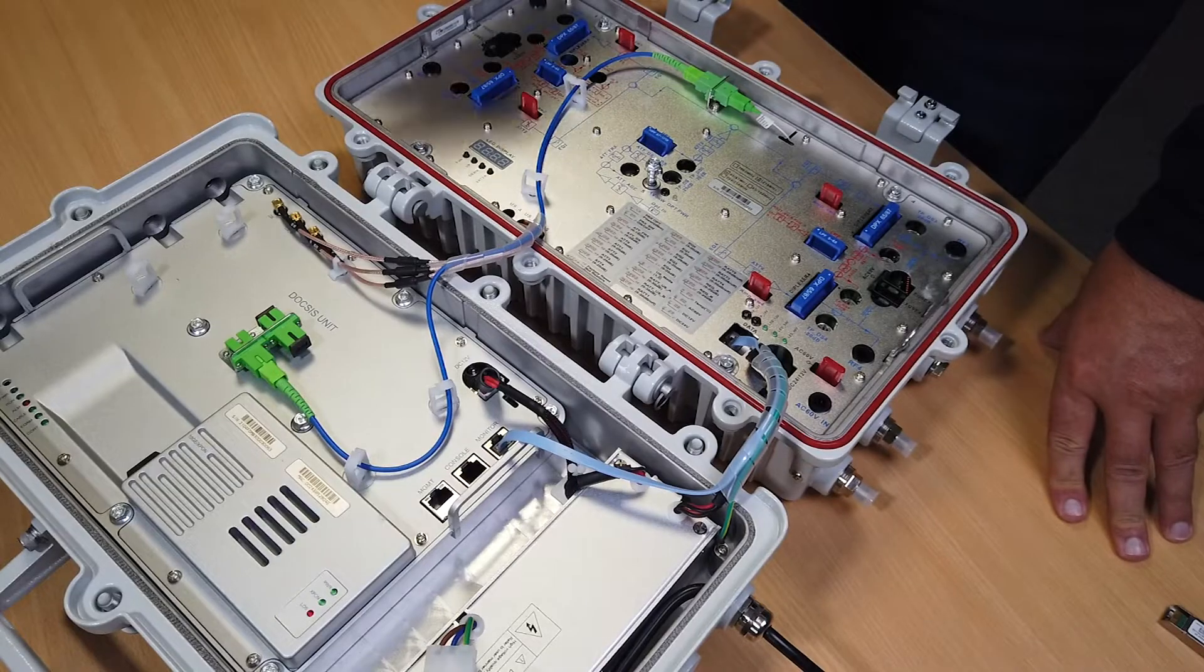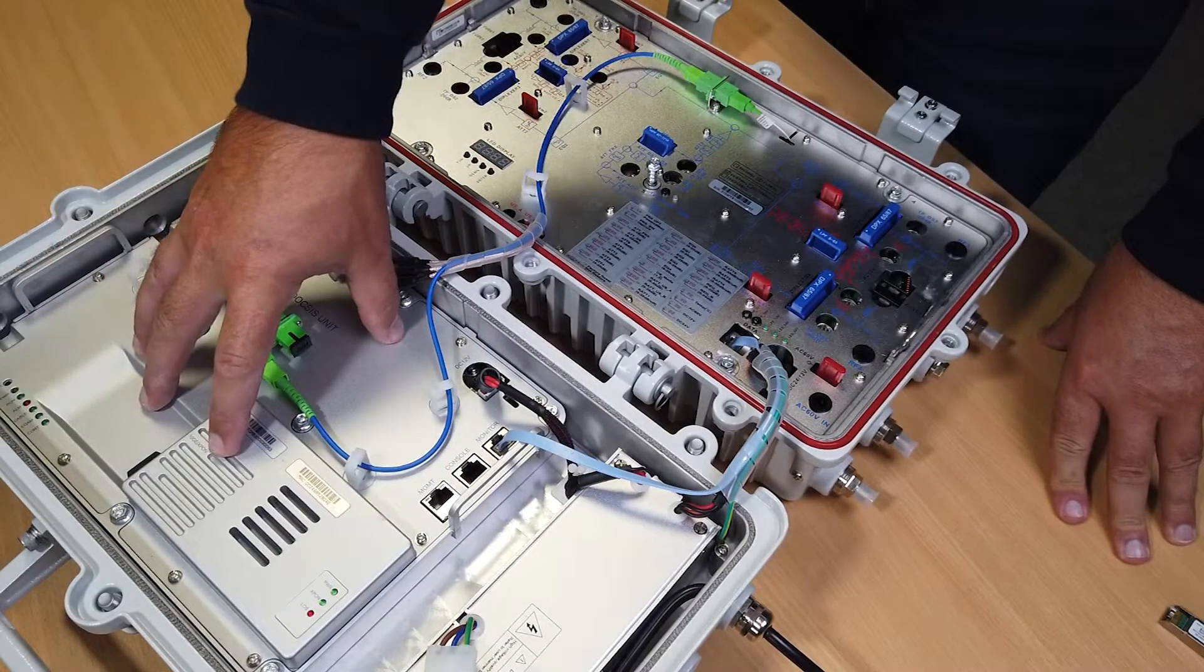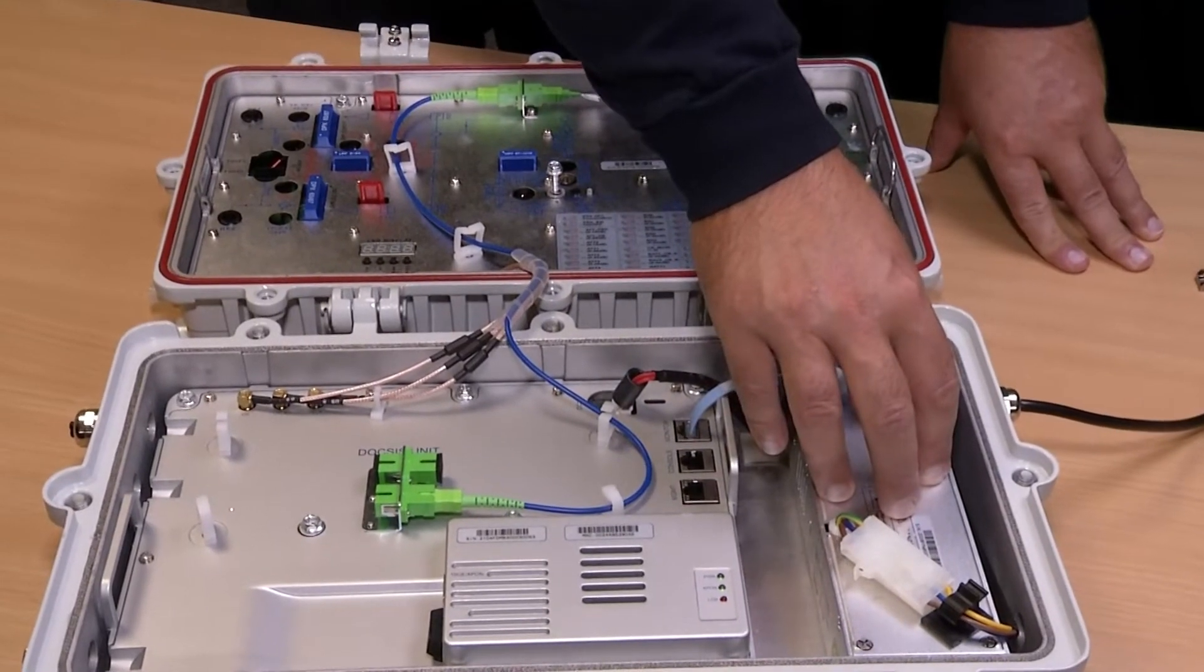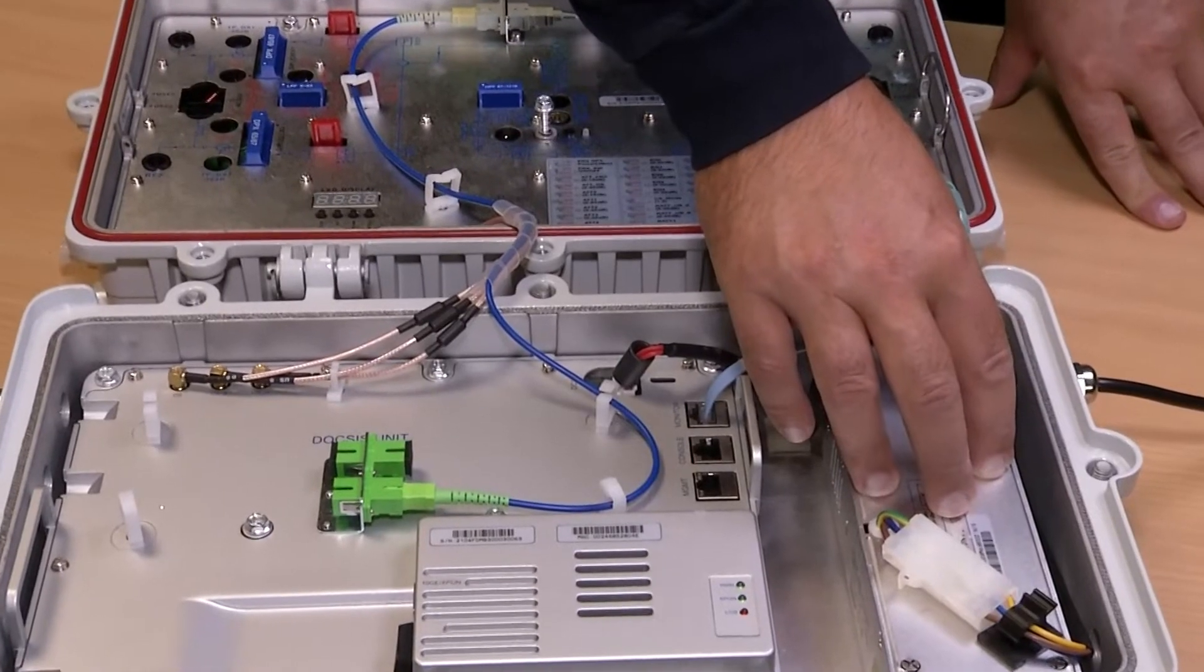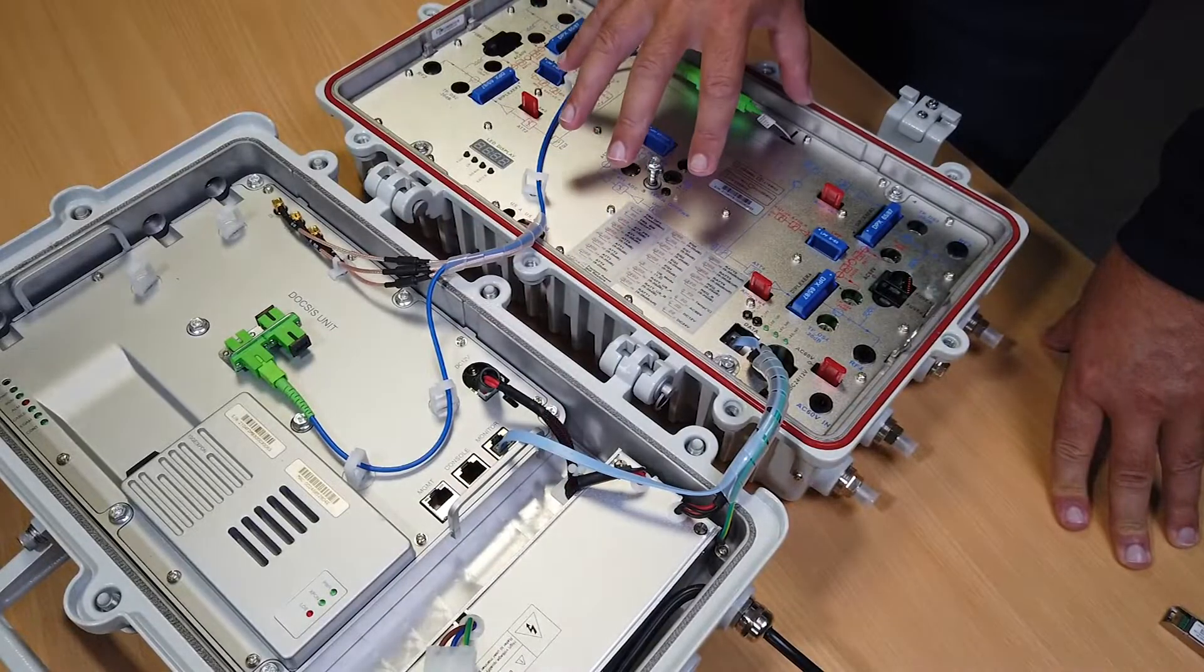And now I'd like to explain what goes on under the hood. Here's the DOCSIS module. Here's the power supply, configurable for 220 volts or 60 to 90 volts. And this is where all the TV processing happens.